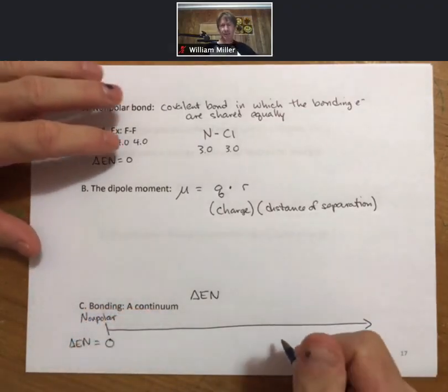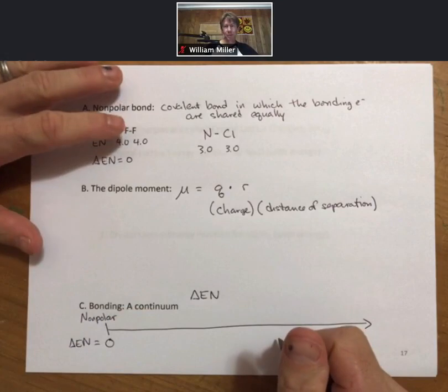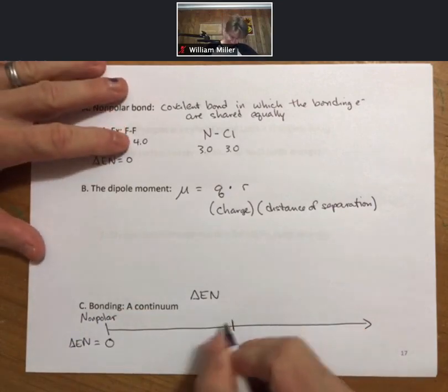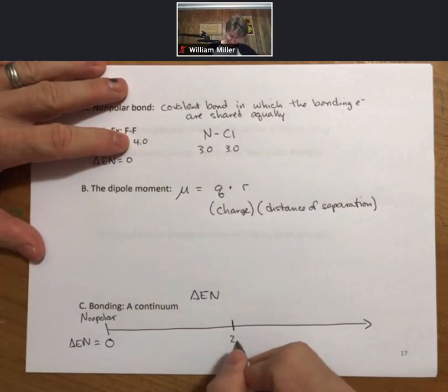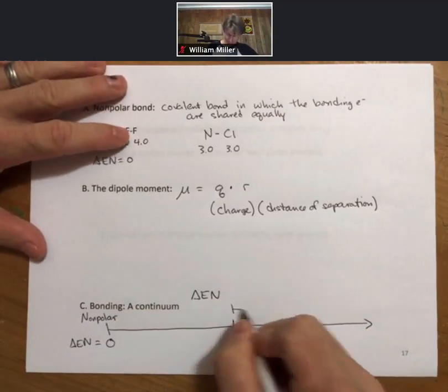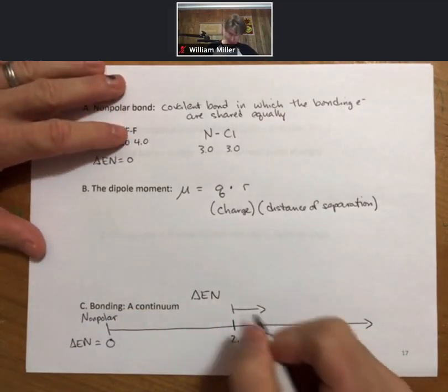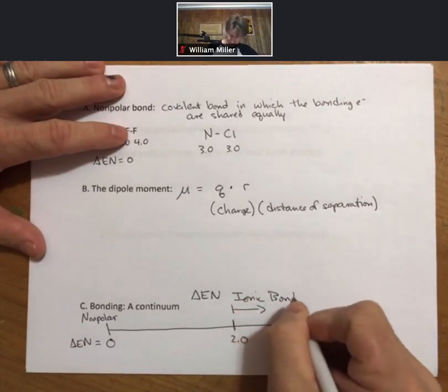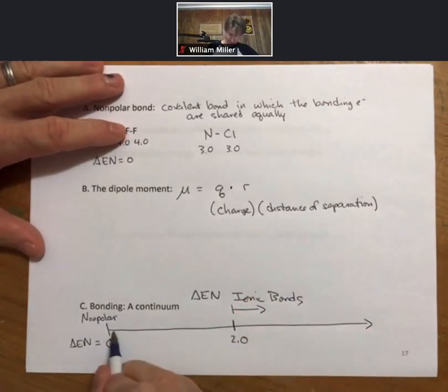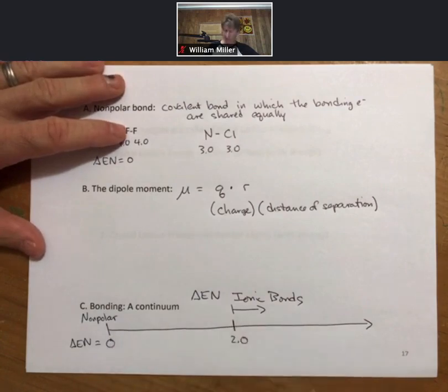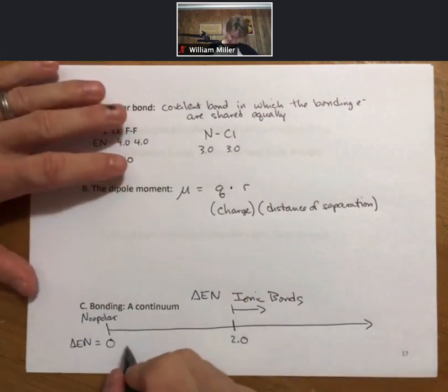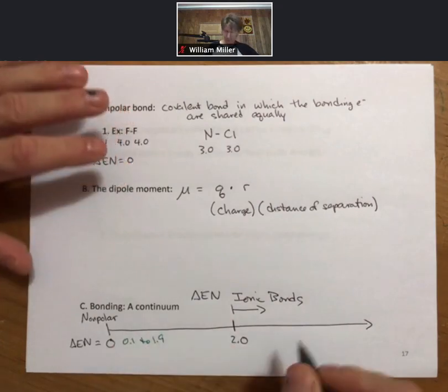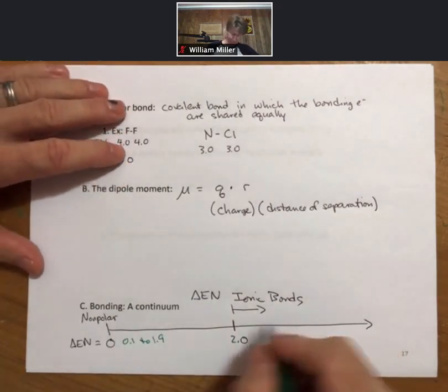A typical definition says that when the difference in electronegativity is 2.0 or greater, those are ionic bonds. Between 0.1 and 1.9, those are polar covalent bonds.